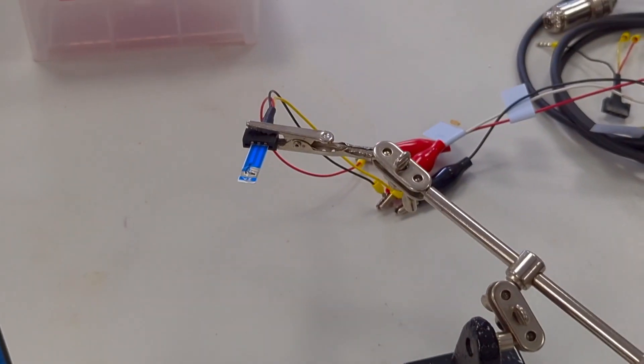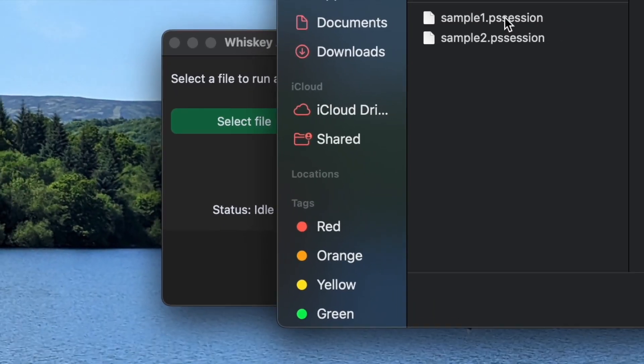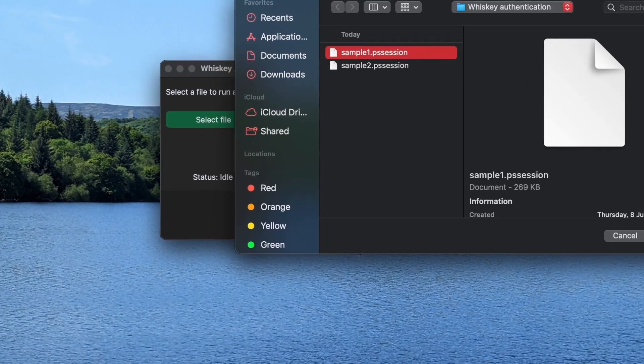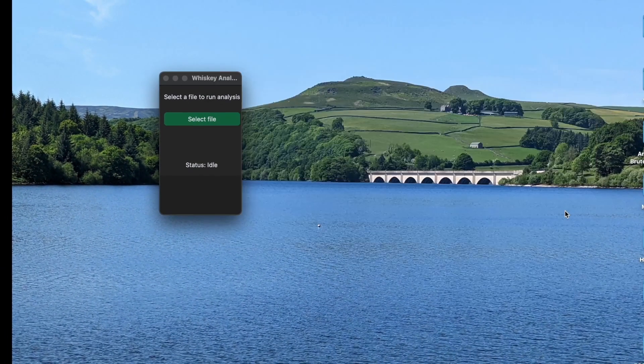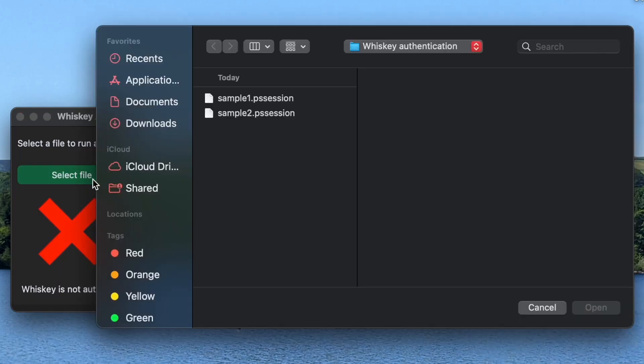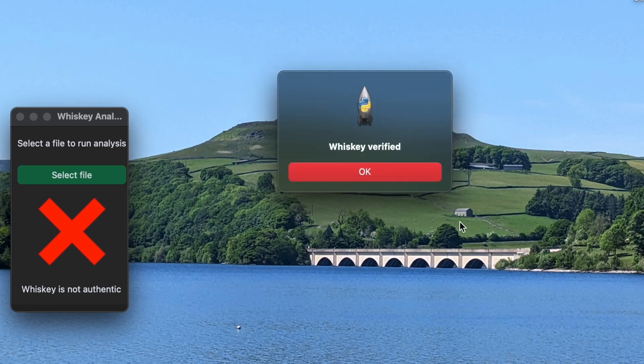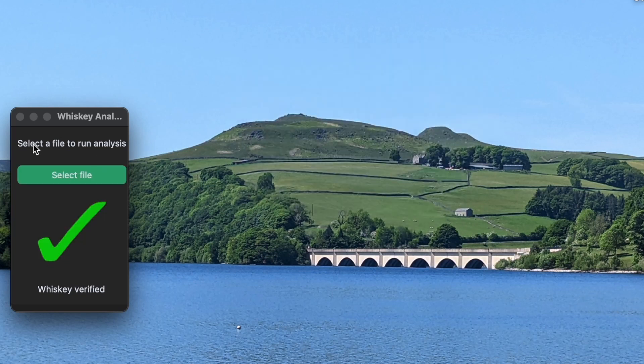Once the data has been collected, we can simply open the data file from the respective potentiostat software in a whiskey analysis software. The software will then tell us if the whiskey is authentic or not. In this case, sample 2 is the authentic whiskey, whereas sample 1 was adulterated.